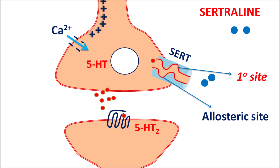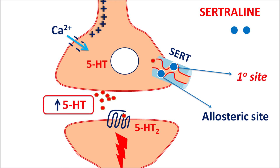Sertraline can bind to both the primary and secondary sites of SERT, thereby inhibiting the reuptake of 5-HT. In this way, 5-HT does not re-enter the nerve terminal, which results in increased postsynaptic activation. This drug increases 5-HT levels within the synaptic cleft, thereby increasing serotonin transmission, which improves symptoms in depressive patients.